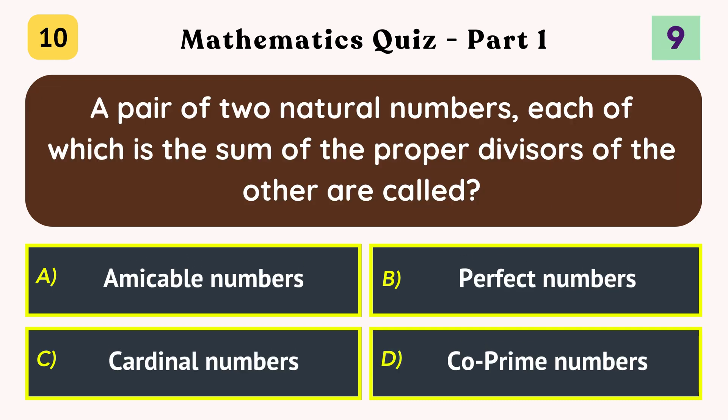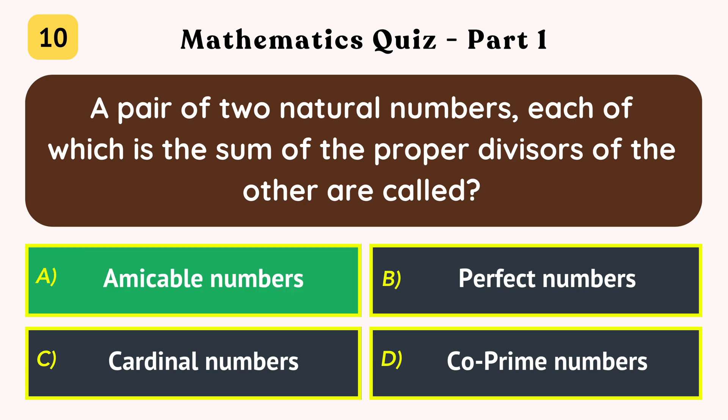A pair of two natural numbers, each of which is the sum of the proper divisors of the other are called? Amicable numbers.